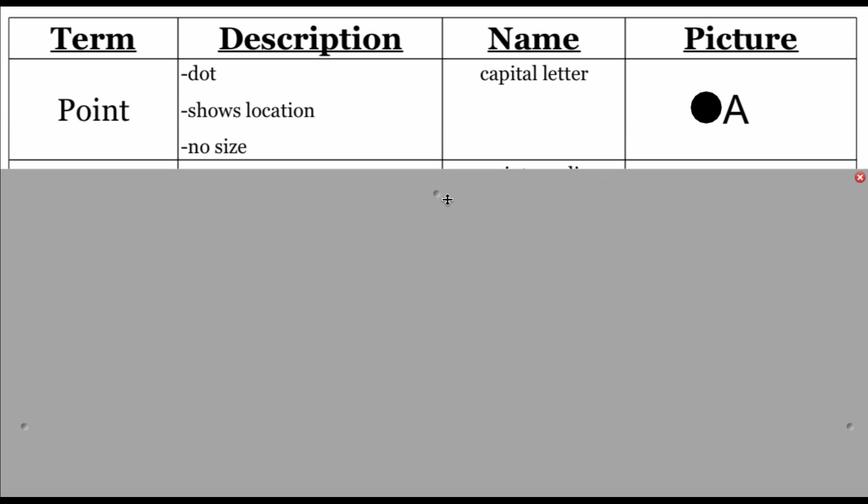Pretty much everything else that we do in geometry is based on points, lines, and planes. Our first object is a point, and a point is just represented by a dot. You're probably pretty familiar with points from algebra and graphing. Points help us show locations out in space. They don't have any actual size to them, so even though we draw them with a dot, they're actually infinitely small. We wouldn't be able to see them with our naked eye.